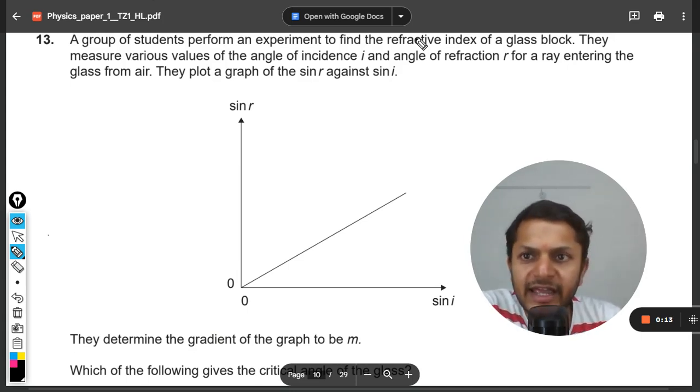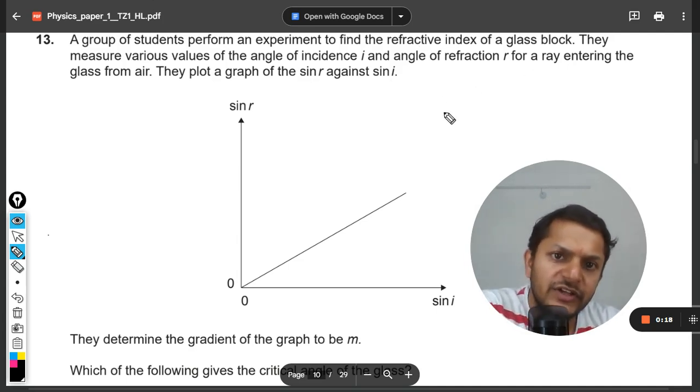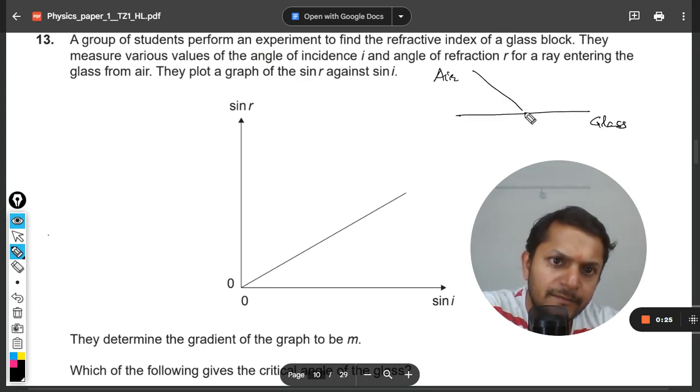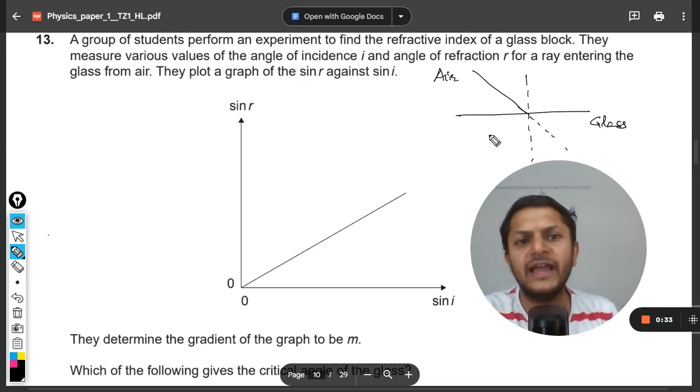So first of all, I must say this is the glass and this is air, and light is trying to enter into it. Obviously, when the light is moving from a rarer medium to the denser medium, the light bends towards the normal.